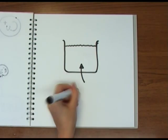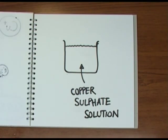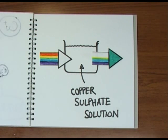In copper sulphate solution, for example, the ions absorb light at the red end of the spectrum, so the light leaving the solution looks bluish.